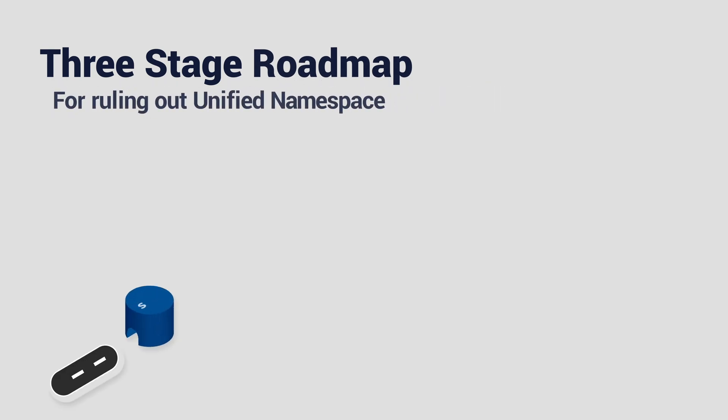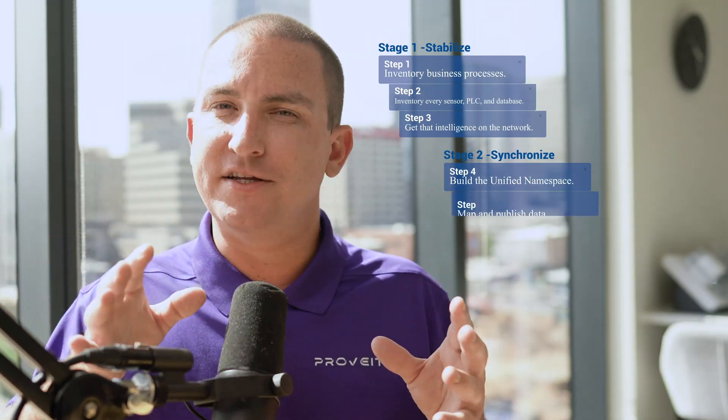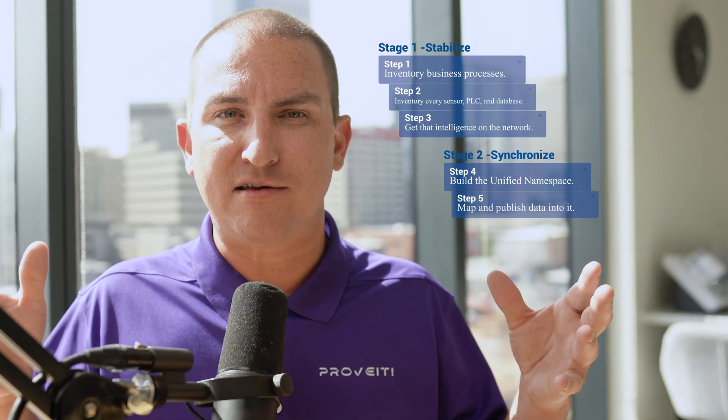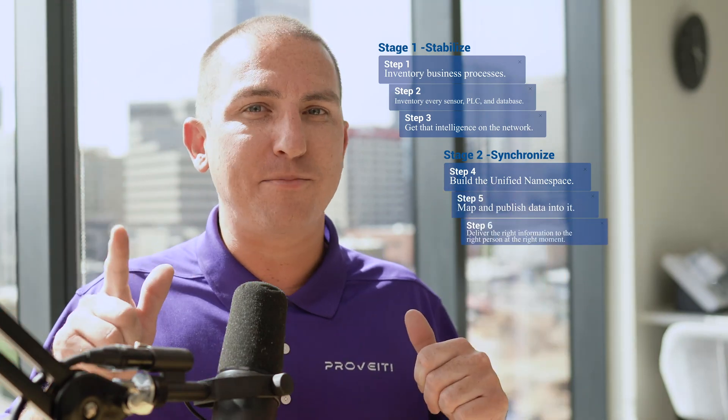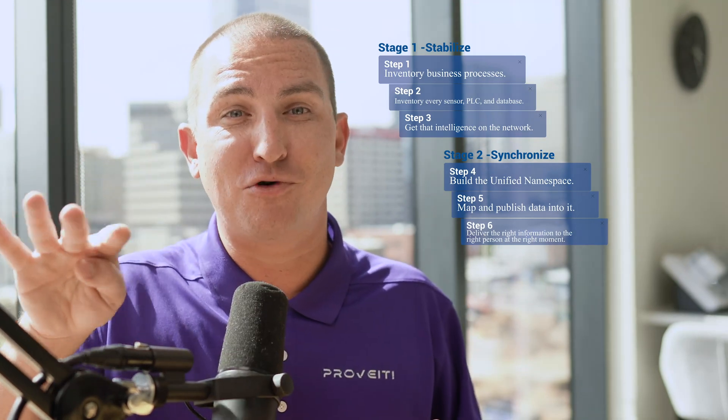Here's your three-stage roadmap for rolling out a unified namespace. Stage one — stabilize: inventory your business processes, every sensor, PLC, and database, and integrate that intelligence into the network. Stage two — synchronize: build a unified namespace, map and publish data into it using a semantic hierarchy, and deliver the right information to the right person at the right moment. If you miss this step, nothing downstream will work.